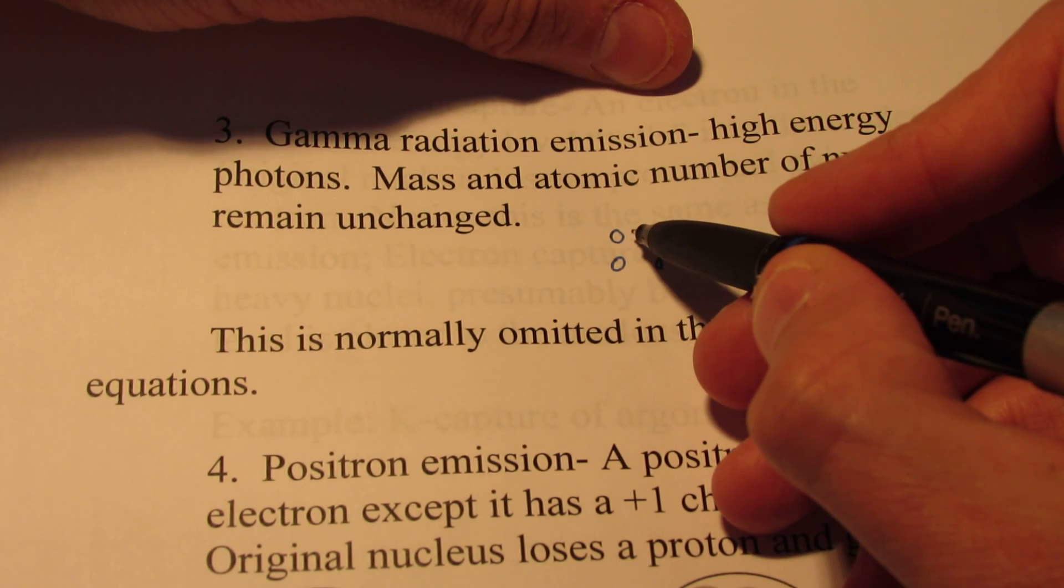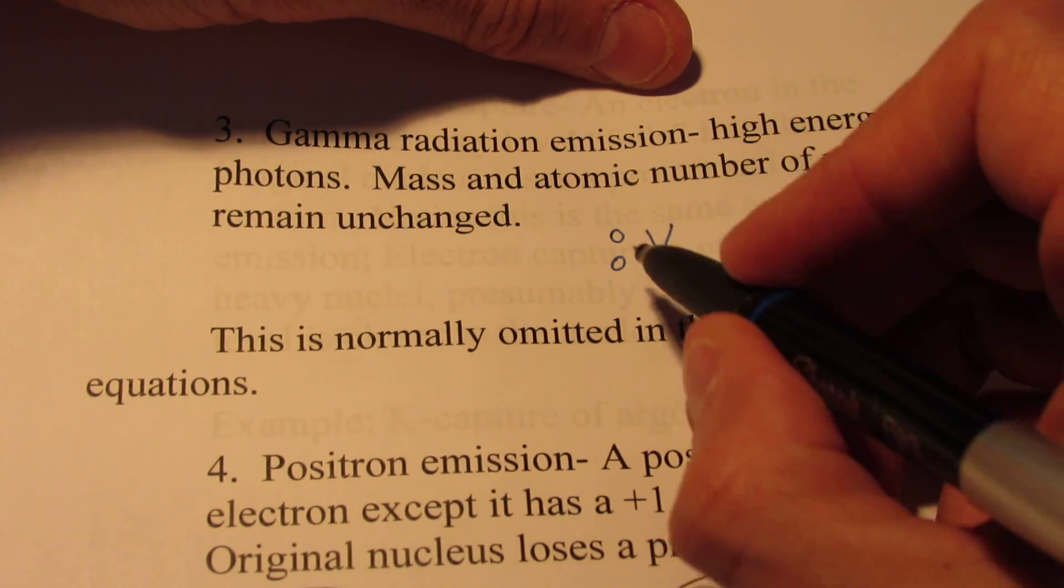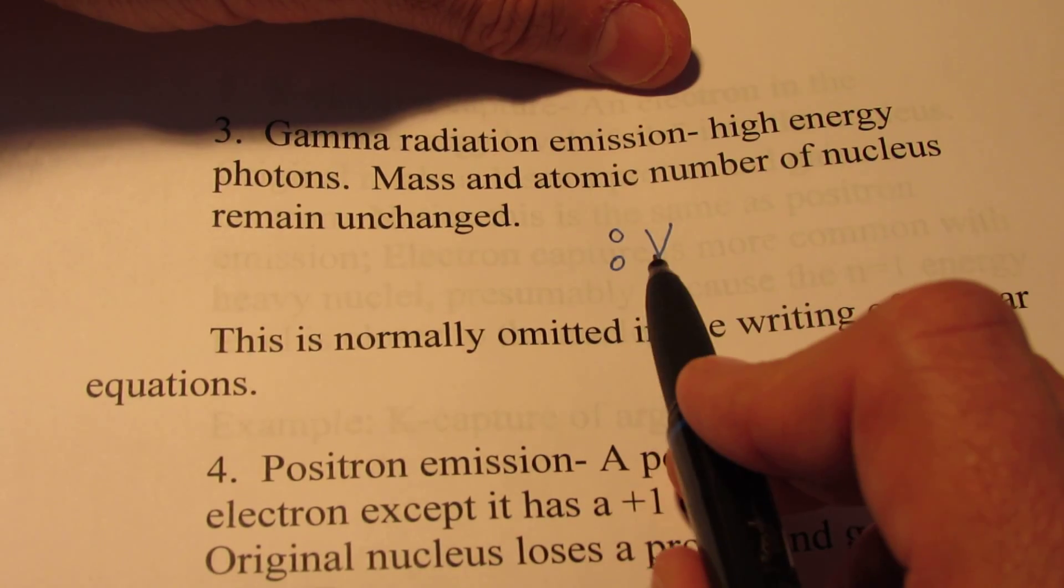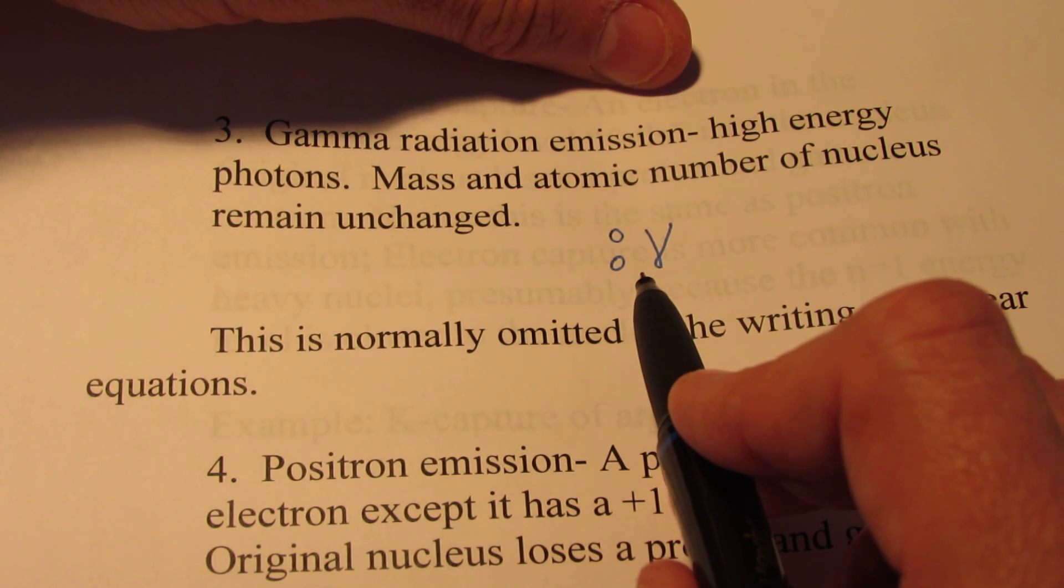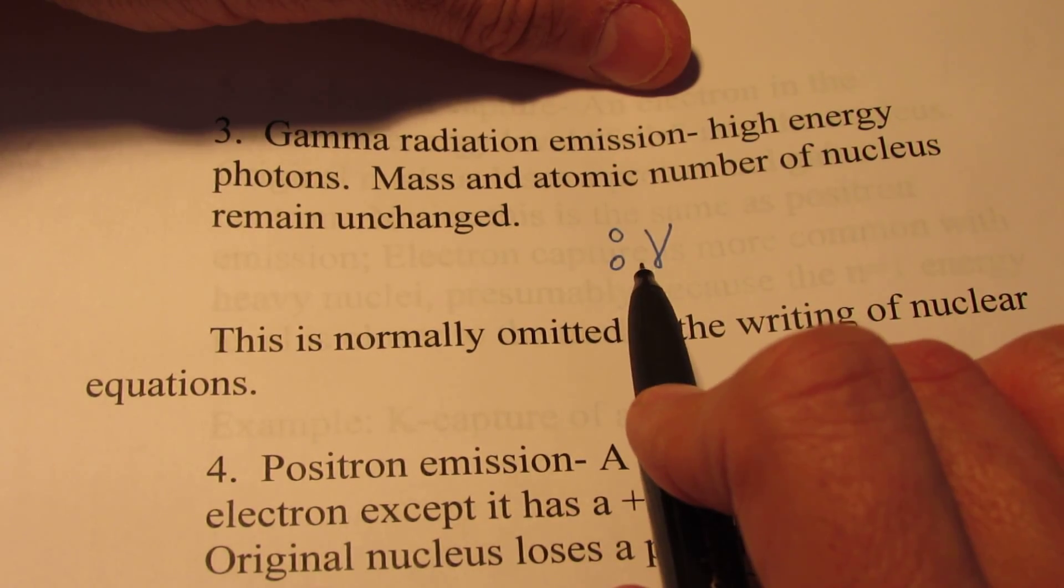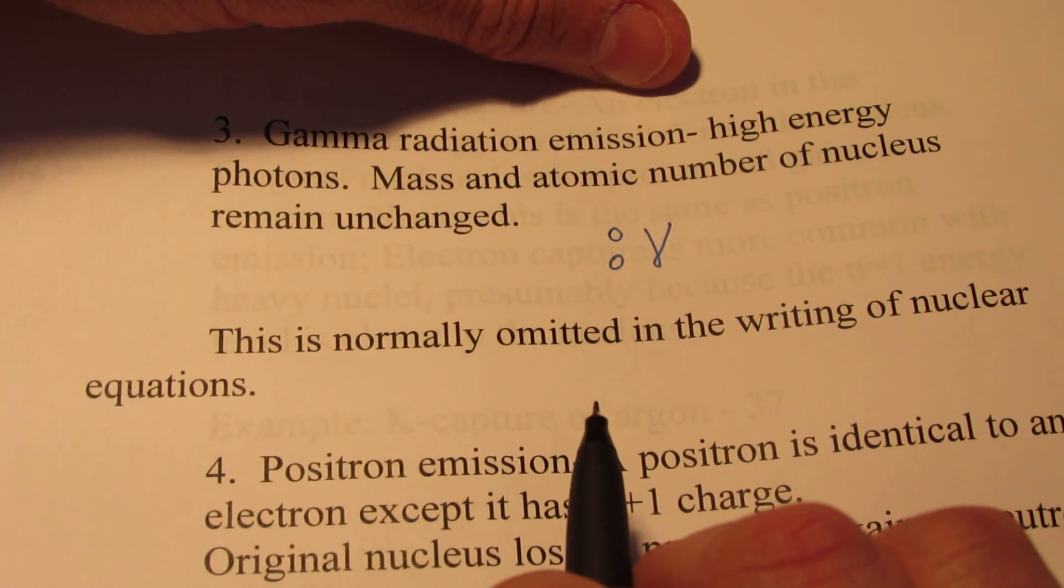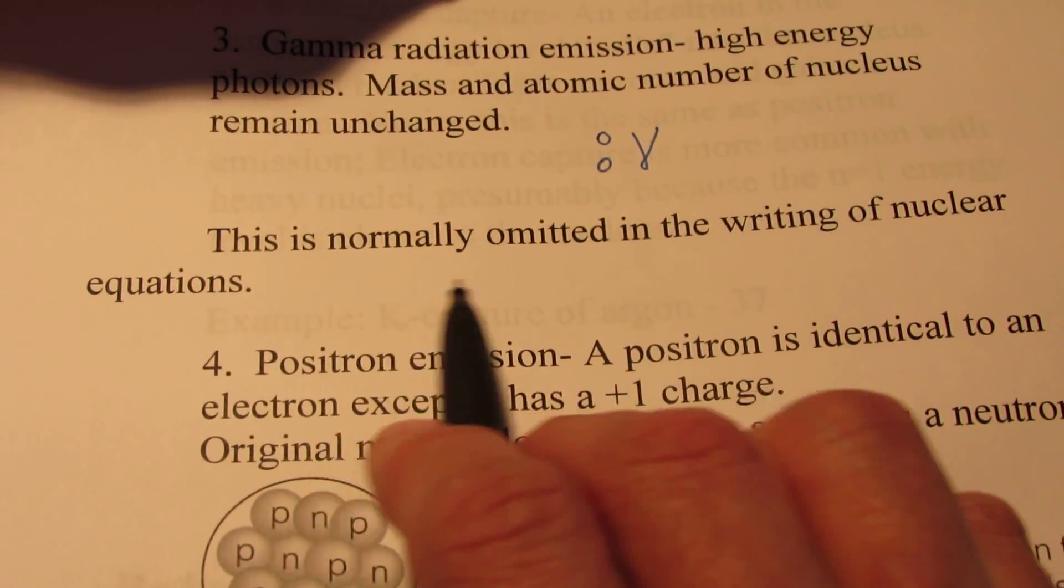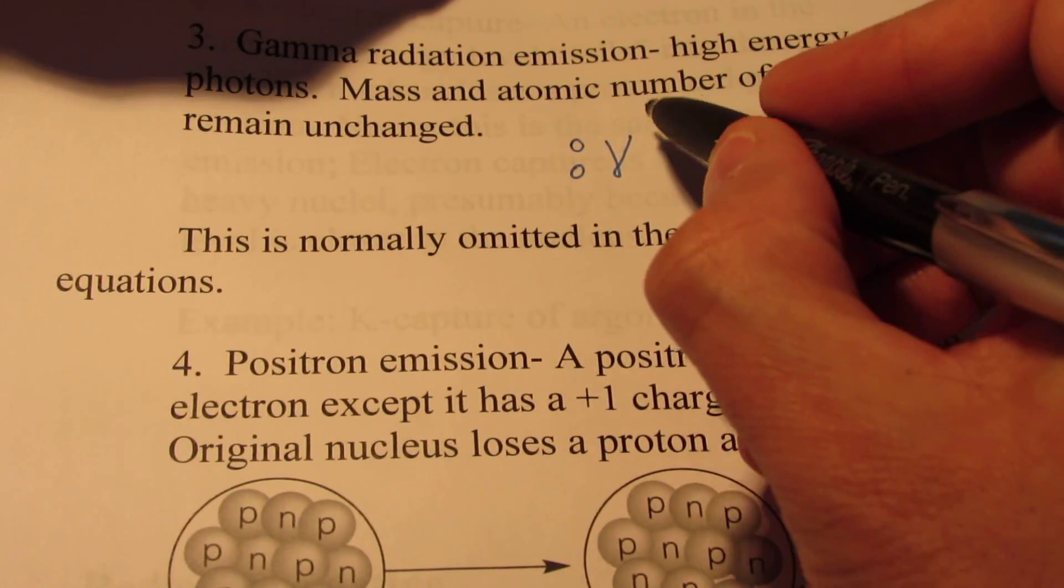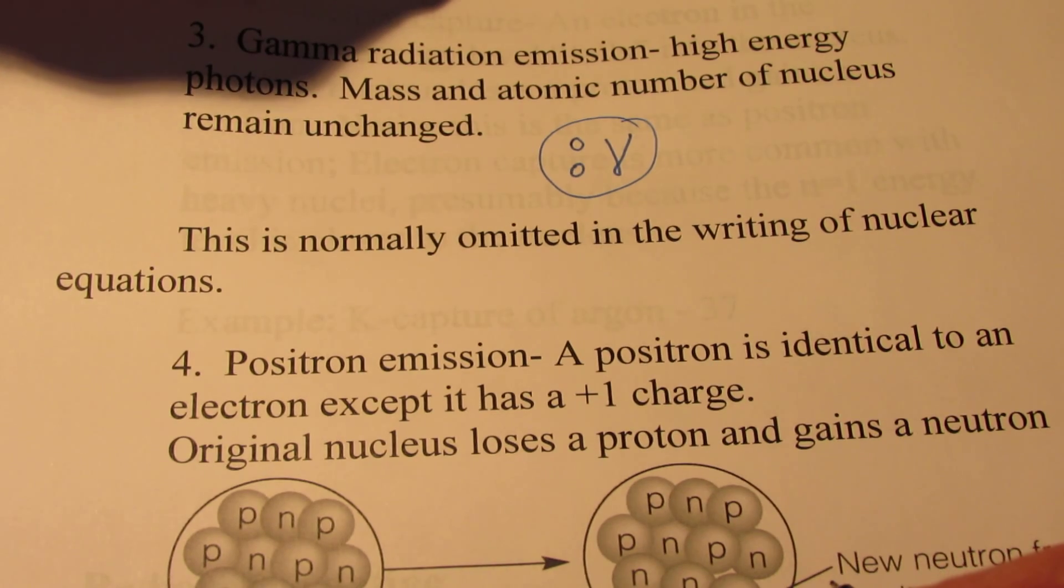As a result, the mass and the atomic number of the nucleus remain unchanged. So oftentimes it's symbolized as 0 over 0 with a gamma symbol. Zero meaning the atomic number remains unchanged, and zero up top meaning the mass number remains unchanged. So it's just high frequency, high energy electromagnetic radiation that is essentially massless. That's why its penetrating ability is so high - it's the tiniest of all the particles. Normally we omit this in writing the nuclear equation. However, once in a while you will see that symbolism.